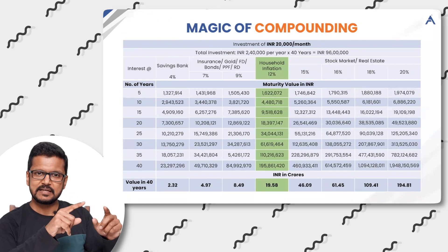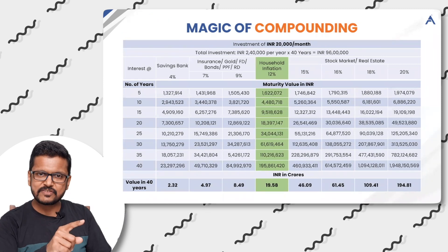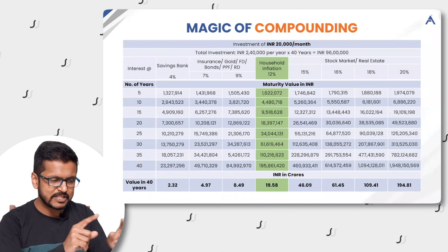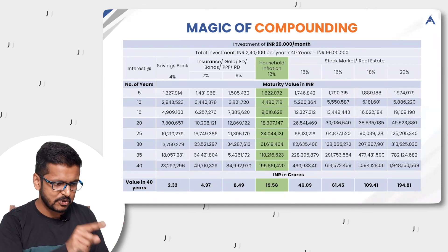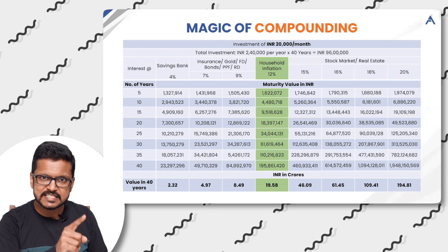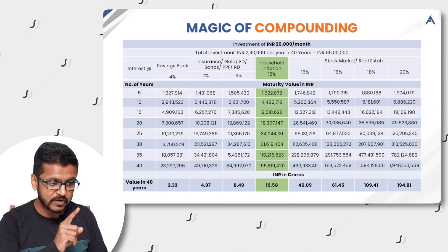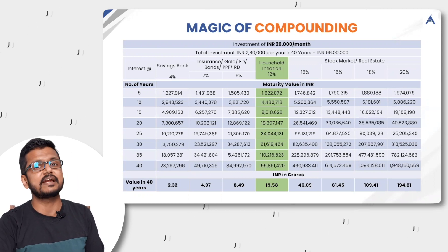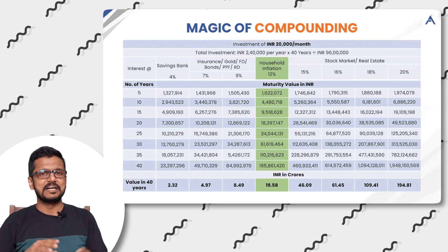Same table but instead of 5,000 rupees, 20,000 rupees per month. Look at the last four figures: 46 crores, 61 crores, 109 crores, and 194 crores.